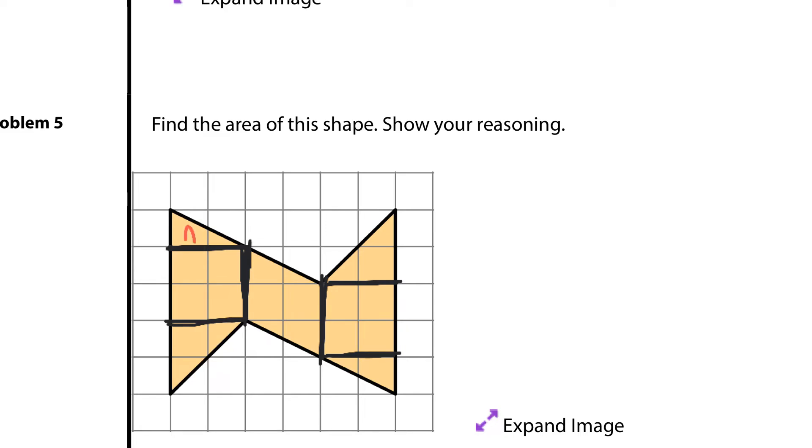if I call this shape A, one for the base, two for the height. And so for A, area is going to equal base times height, divided by two. So one times two, divided by two, is two divided by two, which gives me an area of one for A.